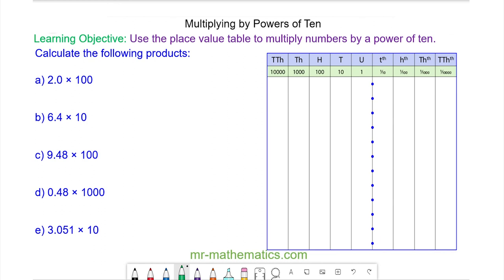Hello and welcome to our lesson on multiplying by powers of 10 using the place value table. We're going to begin with 2.0 multiplied by 100.